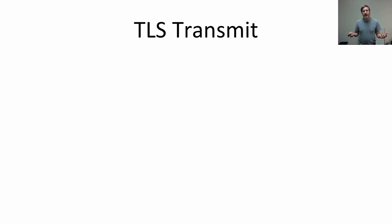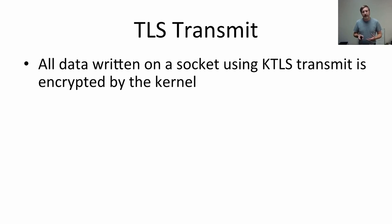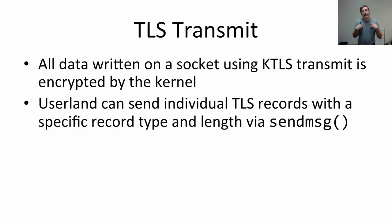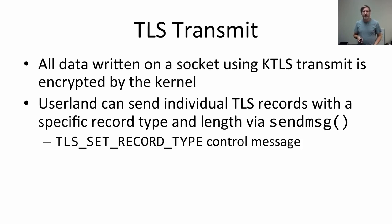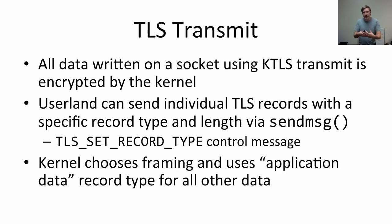For TLS transmit, all data that userland writes into a socket is unencrypted, and the kernel is responsible for encrypting it. If userland needs to send a specific TLS record type — for example an alert — it can use sendmsg with a control message specifying the type. Otherwise all other data is treated as raw application data, and the kernel chooses framing boundaries and sets the TLS record type to application data. Anything written with write or sendfile gets packaged into TLS application data records.